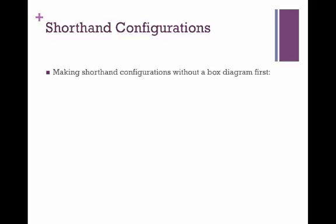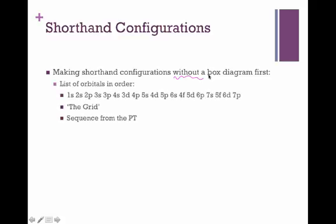Let's dive into making shorthand configurations without a box diagram first. First, you need the list of orbitals in order, and here it is. This could hypothetically be something you could memorize. However, we've already talked about a methodology for figuring that on your own using that grid. You can also figure this sequence out simply by tracing along with the periodic table. This actually makes the grid and all this other stuff obsolete if you can interpret your periodic table in the right ways.